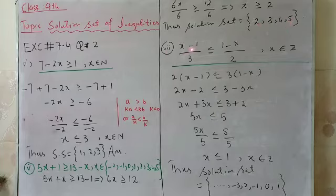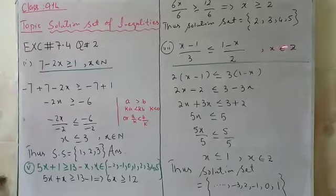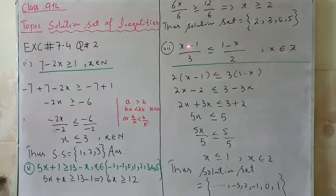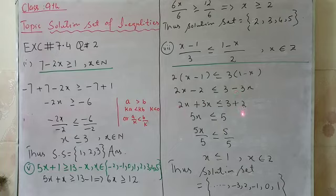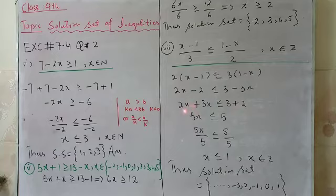Now part 7: x minus 1 divided by 3 is less than or equal to 1 minus x divided by 2, where our solution set belongs to integers. Z stands for integers. By cross multiplication: 2 into x minus 1 is less than or equal to 3 into 1 minus x. Multiplying inside: 2x minus 2 is less than or equal to 3 minus 3x. Combining variables on one side and constants on the other: 2x plus 3x is less than or equal to 3 plus 2, giving 5x less than or equal to 5.